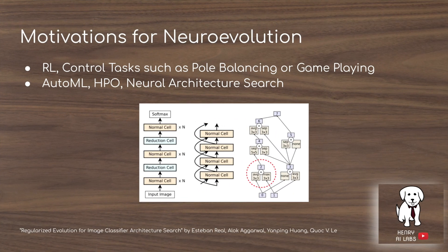The motivations for neuroevolution: it has been really successful in reinforcement learning control tasks like pole balancing or game playing. Additionally, things like AutoML, hyperparameter optimization, and neural architecture search contain meta-parameters where we're trying to figure out ways to design neural networks. Reinforcement learning has some promise but is generally found to be slow. Differentiable search methods like DARTS have been pretty successful, but neural evolution is a very promising technique, starting with the foundational NEAT algorithm.